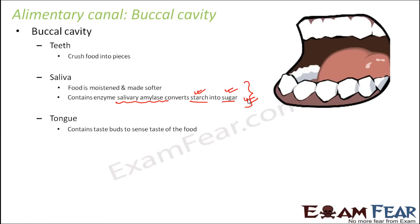The tongue is a movable organ that contains taste buds to sense the taste of food. Without the tongue, you would not be able to feel whether the food is sweet, salty, or sour. Since the tongue is movable, it also helps to push the food inside your food pipe, so the movement of the tongue helps in sending food further inside your body. So teeth, saliva, and tongue are all very important in the buccal cavity, and next we will talk about each of these in detail, starting with teeth.